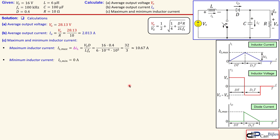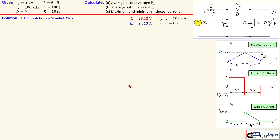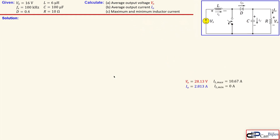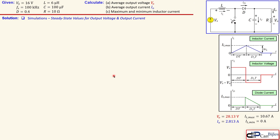The minimum inductor current will be zero because we are working in the discontinuous current mode, as proven in the previous discussion. Taking all the values we have determined for parts A, B, and C, let's now look at the Simulink circuit. This is the Simulink circuit produced for this boost converter, and we will use the scope graphs shown here in the next slides to prove the operation is indeed discontinuous and to verify the calculated values.